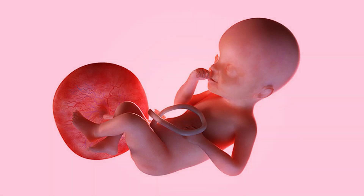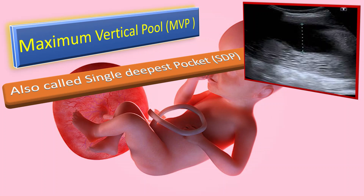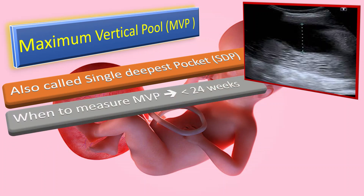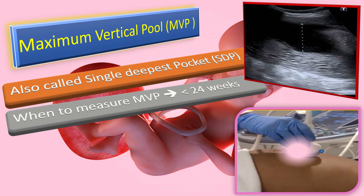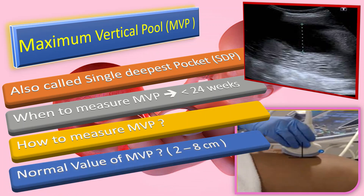What is the maximum vertical pool? This is also called single deepest pocket, or SDP. It is measured in both singleton and twin pregnancies at less than 24 weeks of gestation. To measure it, find the largest pocket of amniotic fluid free of cord and fetal parts, and measure the greatest dimension with the ultrasound transducer perpendicular to the uterus. The normal value of maximum vertical pool is 2 to 8 cm.